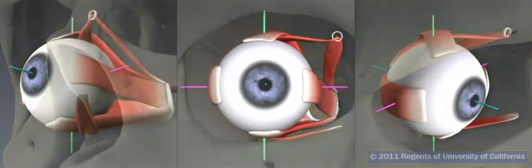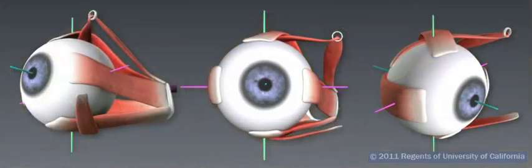The extraocular muscles move the eyeball, or globe, in a combination of three principal axes: lateral medial, superior inferior, and visual gaze, also known as papillary.